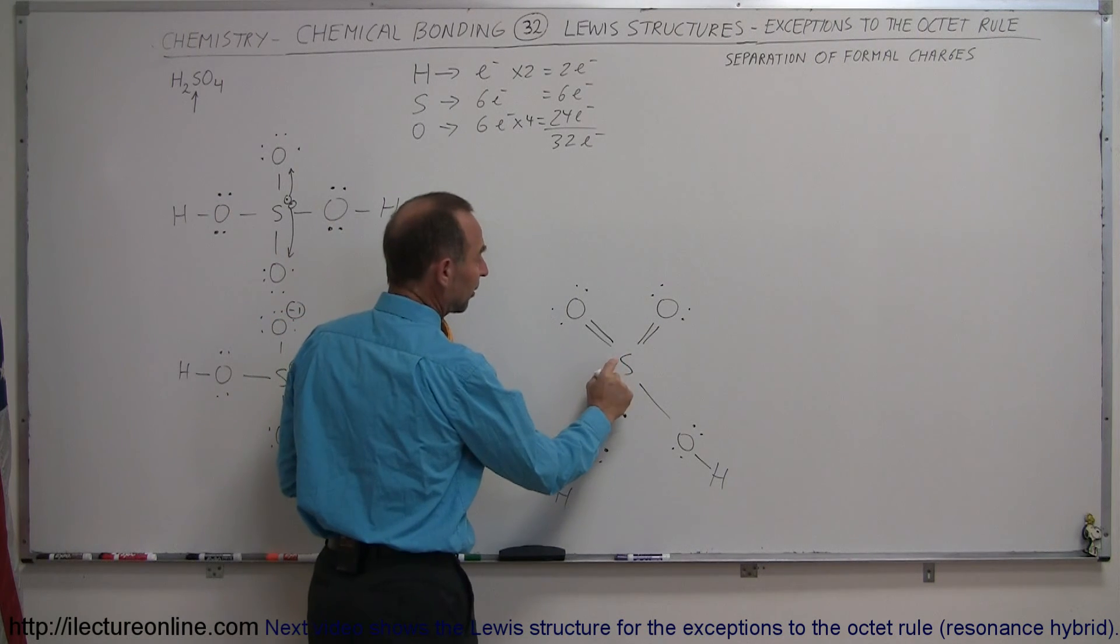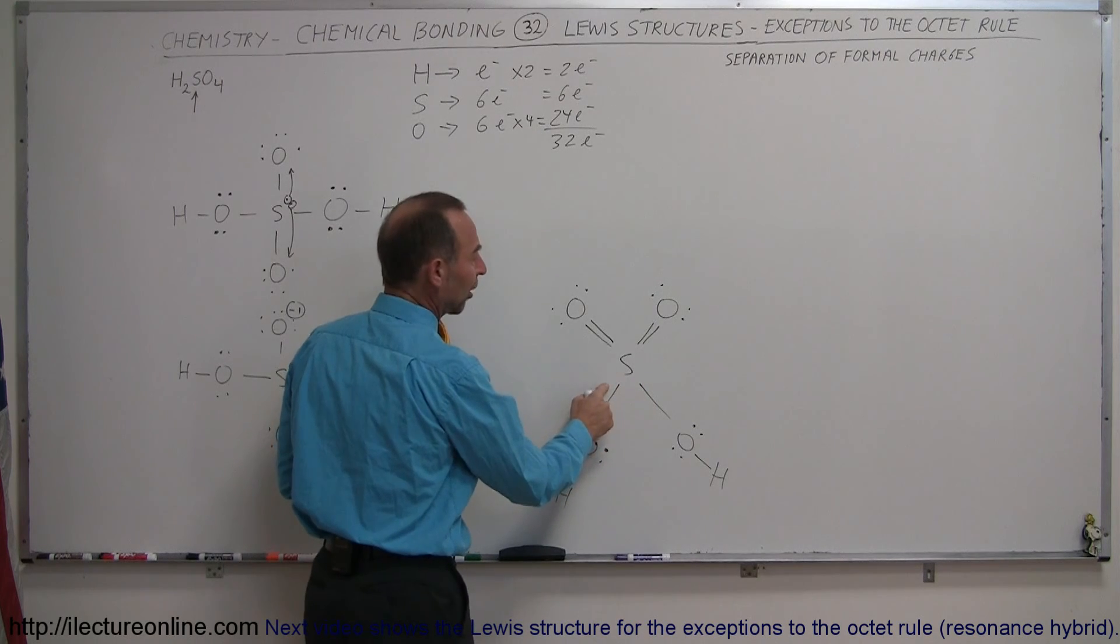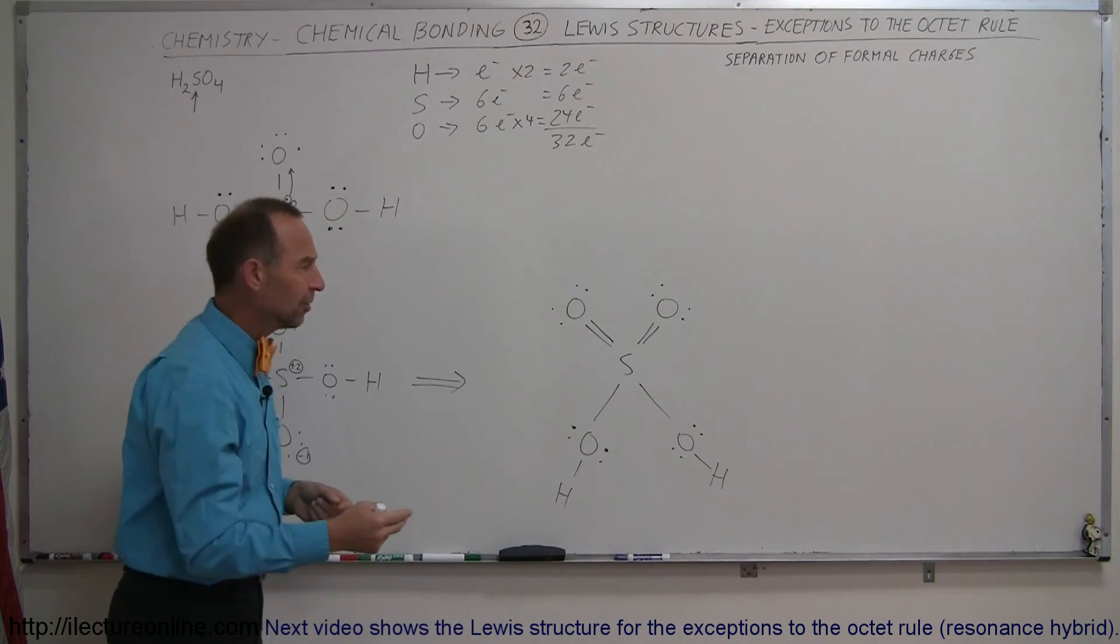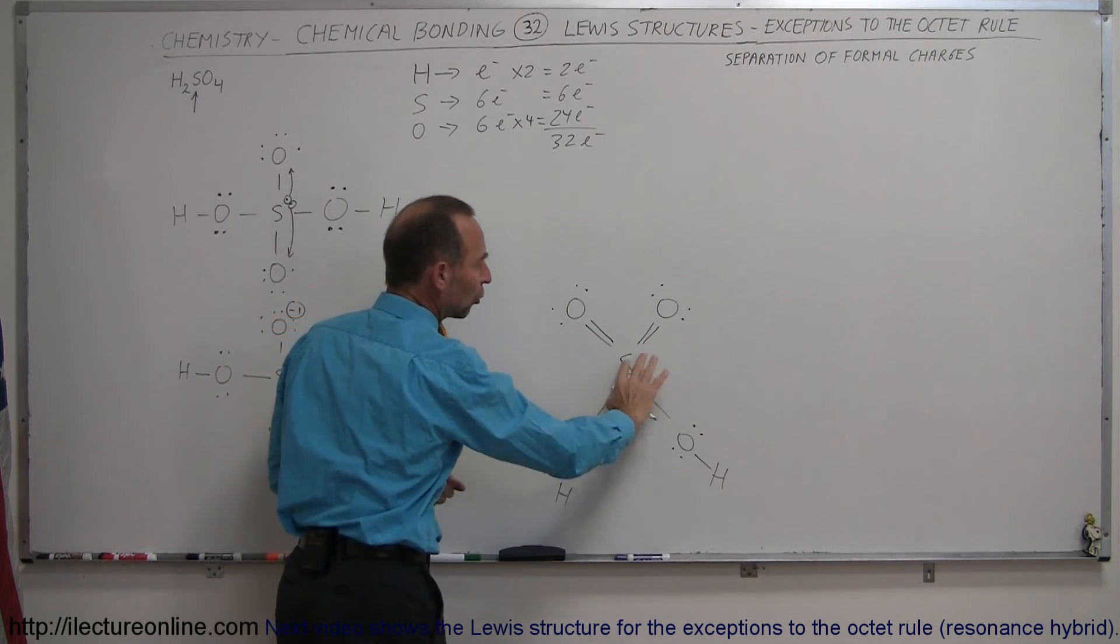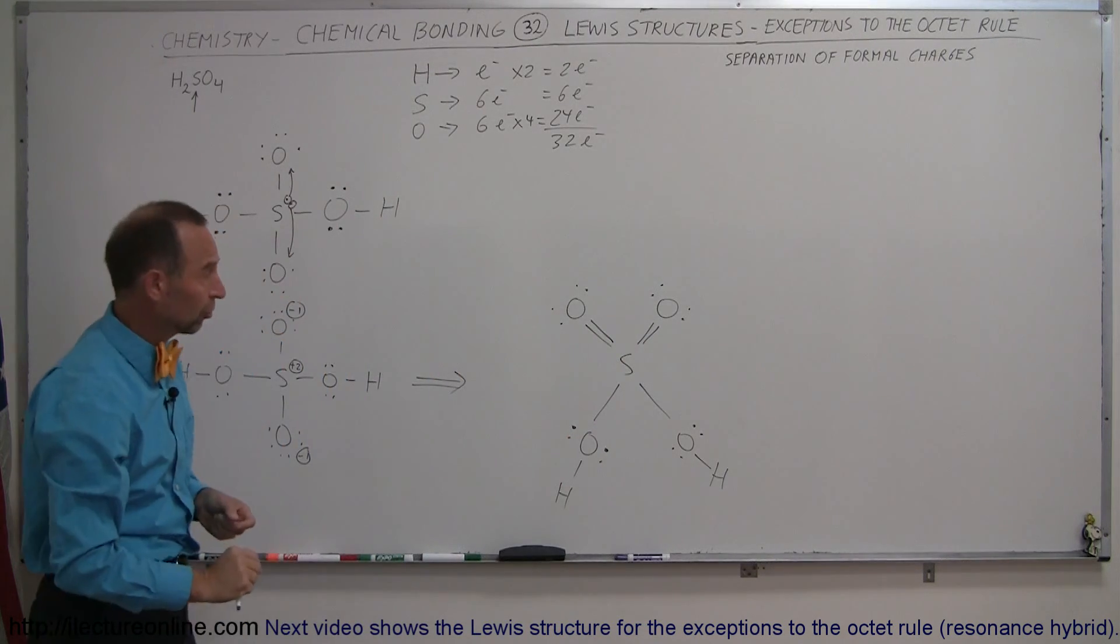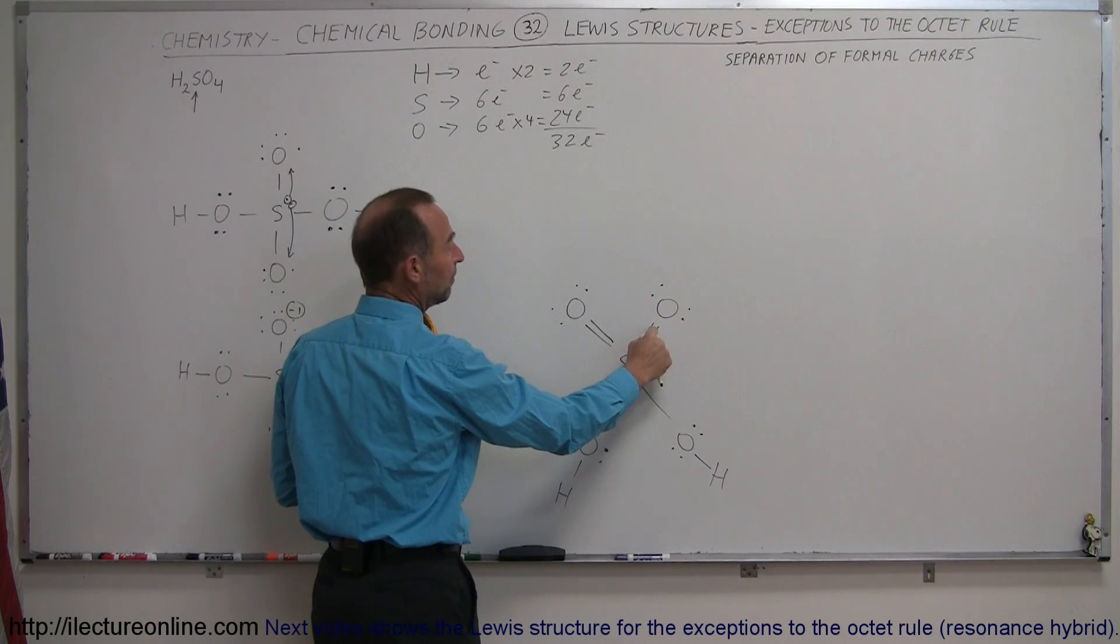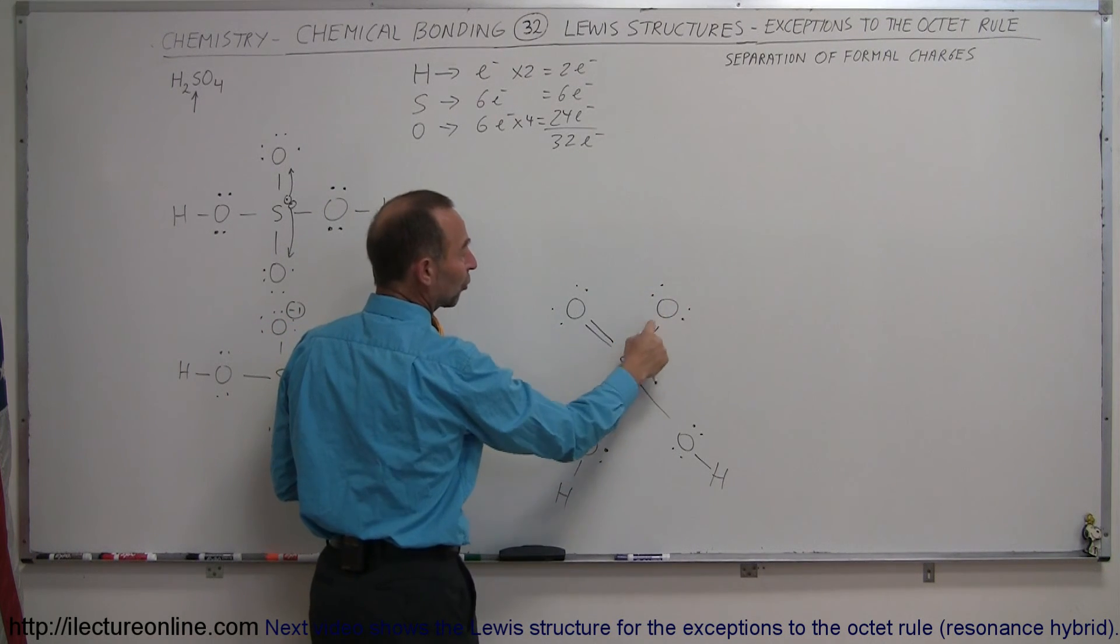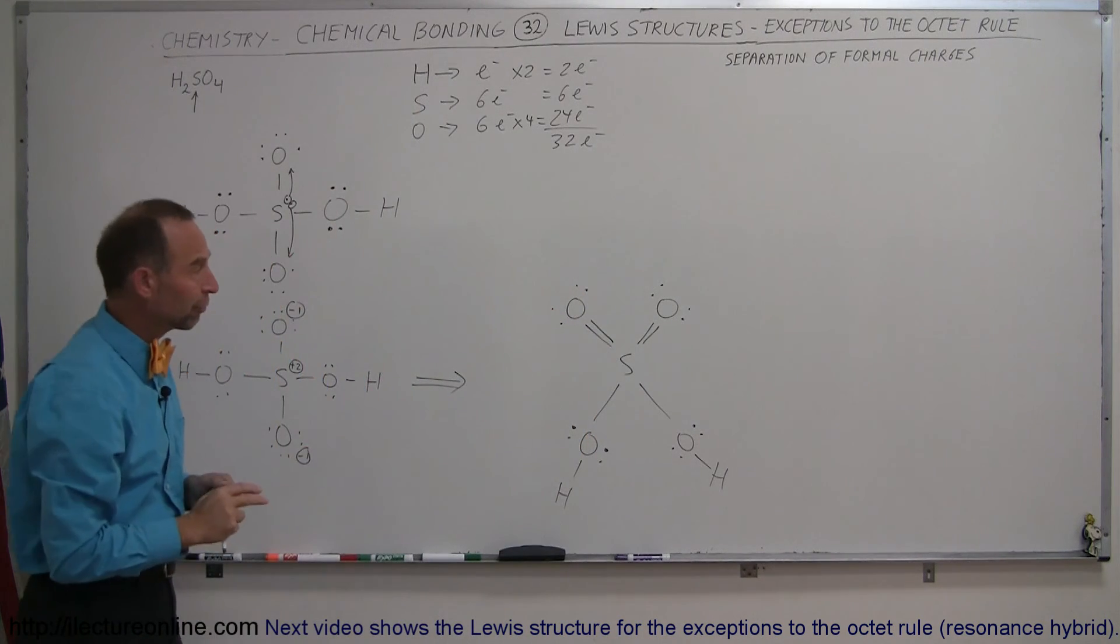So notice that part of the time sulfur will have one, two, three, four, five, six electrons on average. That means since it started with six electrons and on average it will have six electrons, there's no longer a separation of formal charges. Same with the oxygen, these start with six electrons, and part of time they will have an average two, four, six electrons, and so again there's no separation of formal charges.